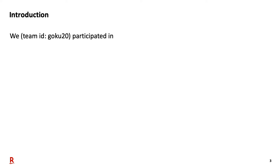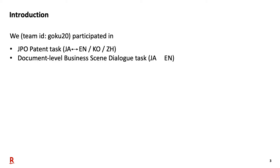Our team with the team ID GOKU20 participated in the JPO pattern task for Japanese to English, Korean, and Chinese bi-directional translation. We also participated in the document level business scene dialogue task for Japanese to English bi-directional translation. Note that this task is newly added in this year's WAT. We also participated in the mixed domain task for English to Myanmar bi-directional translation. Unfortunately, this mixed domain task is not included in the final evaluation this year due to the few submissions.